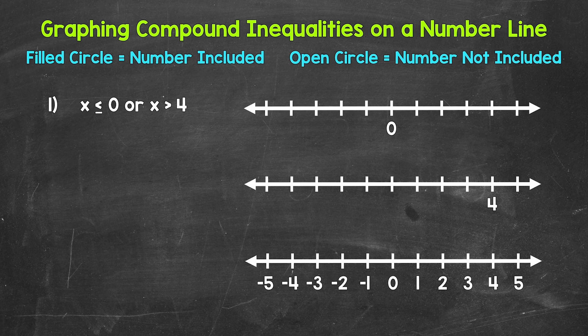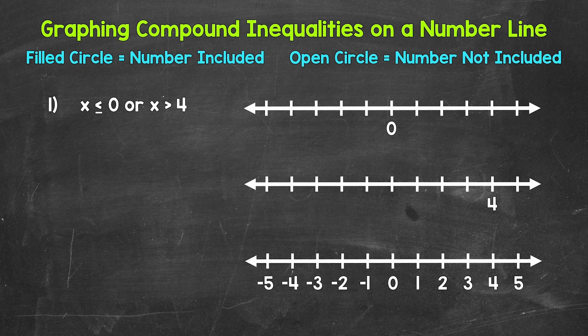And then lastly, we will end with numbers 3 and 4. Let's jump into number 1, where we have x is less than or equal to 0, or x is greater than 4. So x has to be less than or equal to 0, OR x has to be greater than 4. A solution of a compound inequality involving OR is anything that makes either inequality true — this must be true OR that must be true. We're going to break this down into two graphs first, then combine everything into one.